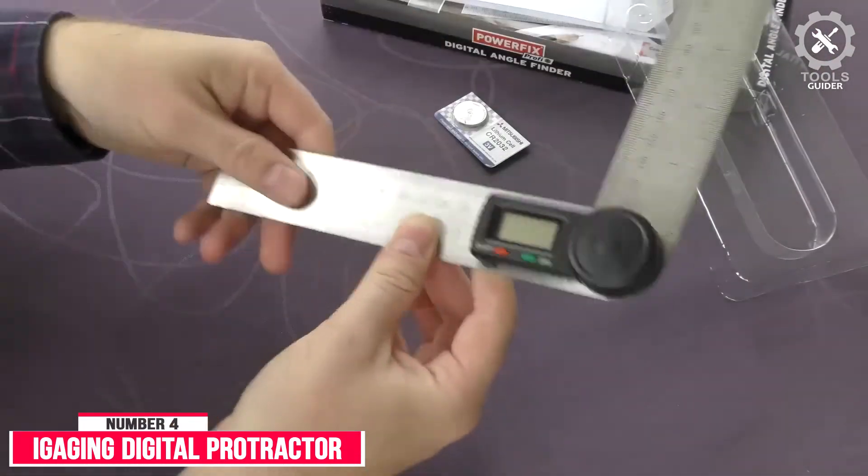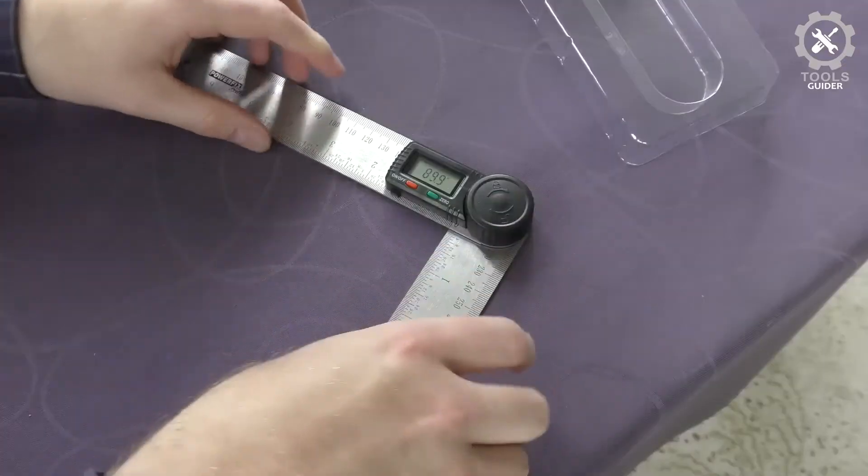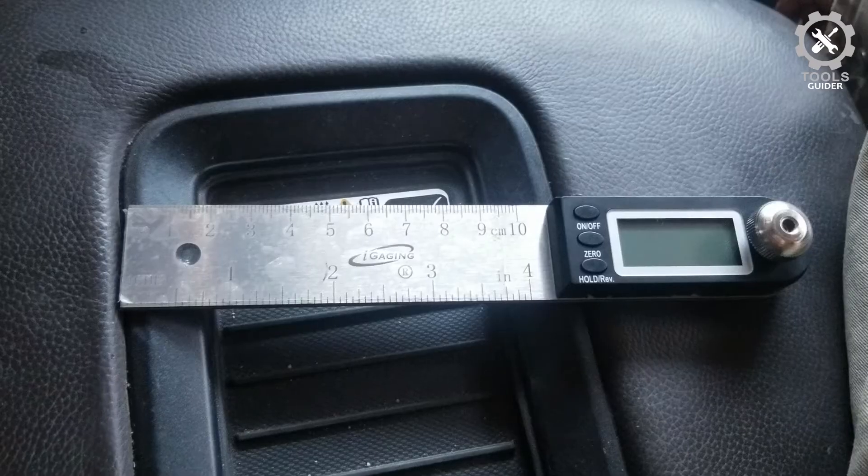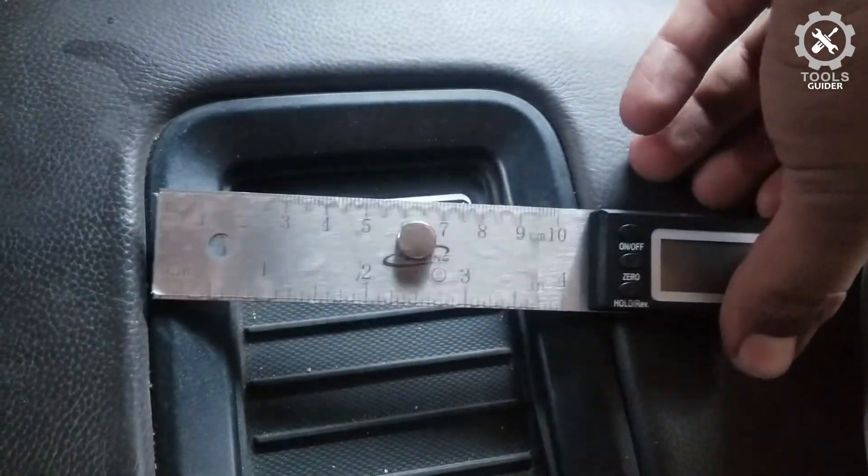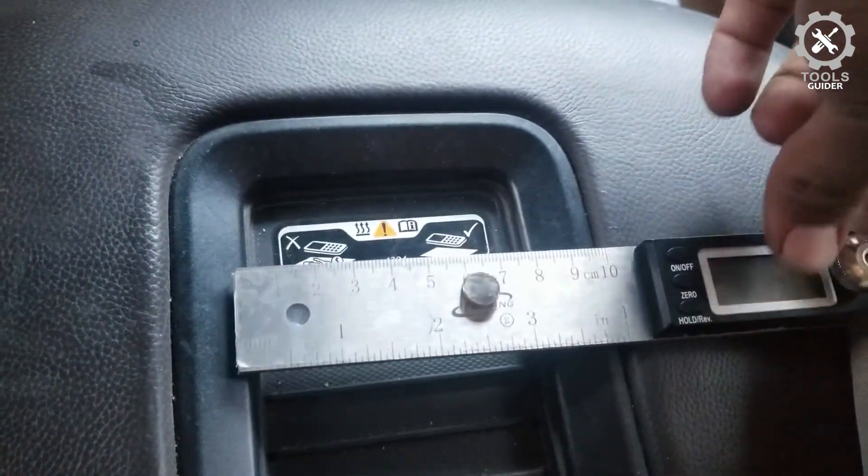The Eye Gaging Digital Protractor if you are looking for a minimal and straightforward protractor with long arms. This is a good choice with 10 inch long blades. The stainless steel material makes it durable and long lasting. It features a large LCD which increases readability.